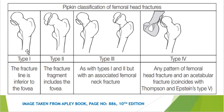The area between the lesser trochanter up to 5 centimeters of the femoral shaft is known as the sub-trochanteric region. Below that is called the femoral shaft. There is an important anatomical landmark in the femoral head known as the fovea centralis.